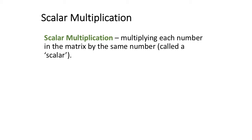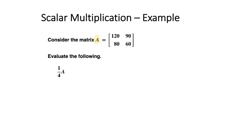After you multiply each number by the scalar, you will have a new matrix. Let's look at an example of how this works. In the example, we have matrix A, and we want to evaluate that matrix using one quarter.